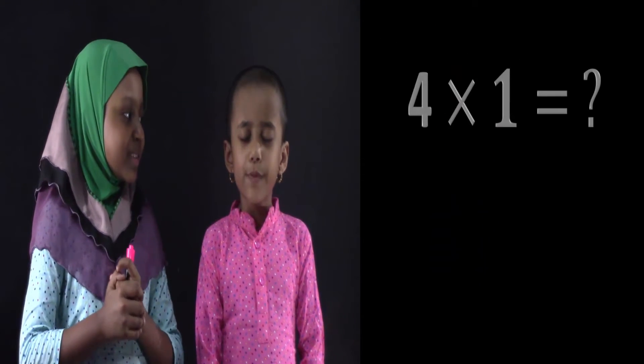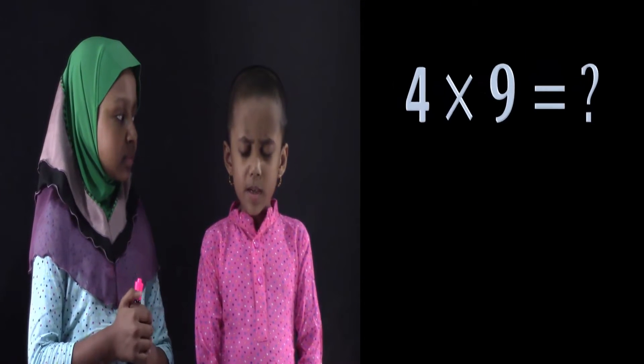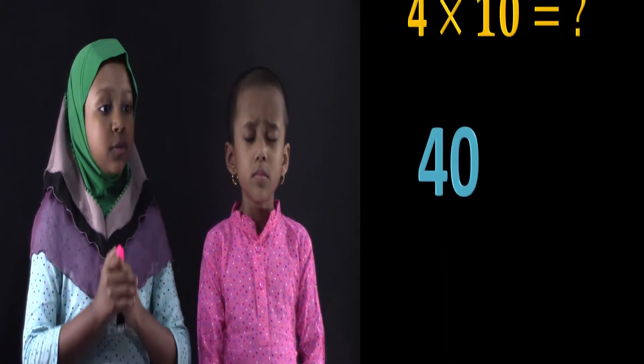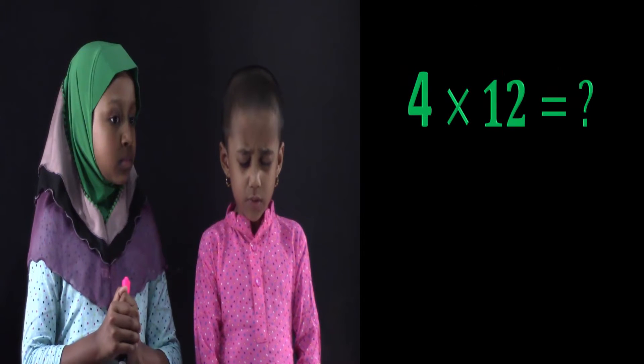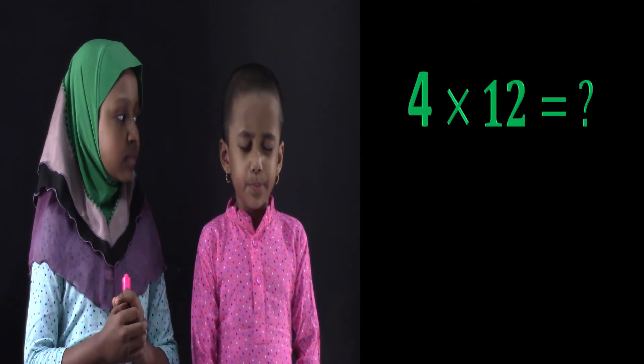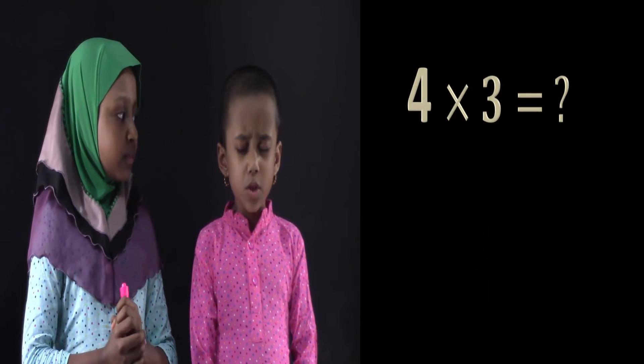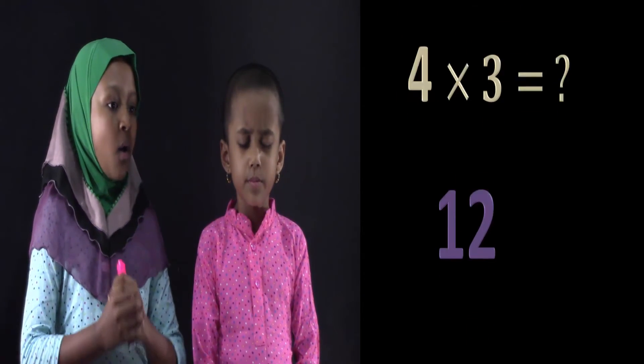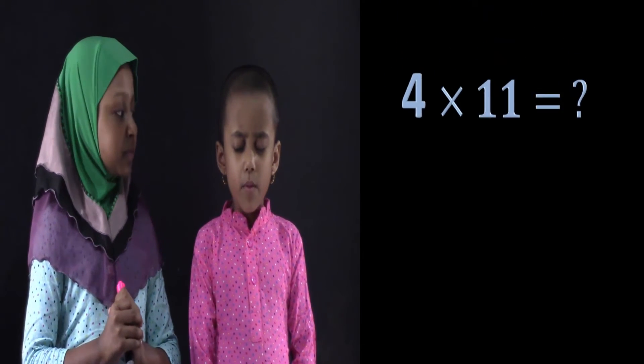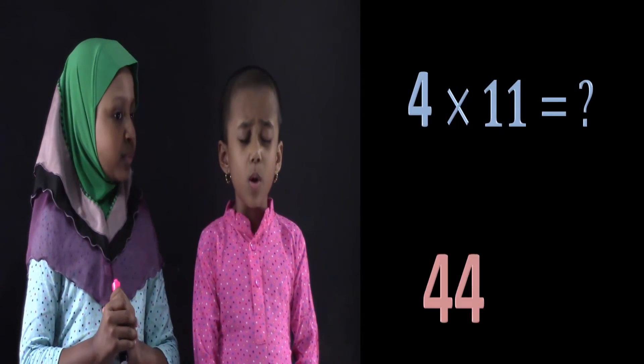Yes. What's 4 times 1? 4 times 1 really is 4. What's 4 times 9? 4 times 9 is 36. What's 4 times 10? 40. What's 4 times 12? 48. Good. What's 4 times 3? 4 times 3 is 12. What's 4 times 11? 4 times 11 is 44. What's 4 times 5? 4 times 5 is 20.